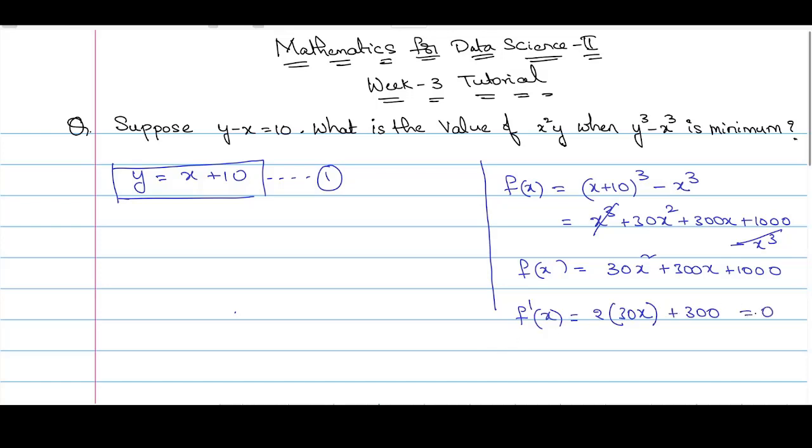We will equate it to 0. We get 60x plus 300 is equal to 0, x is equal to minus 300 by 60, which is minus 5. So we got x is equal to minus 5 as the critical point.